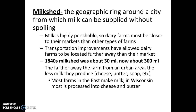Transportation improvements — refrigerated trucking and refrigerated train cars — have allowed dairy to move further from the market. Keep in mind, the further away you are from the market, the less likely you are to produce milk for sale; instead you'll produce cheese, butter, or soap. This applies well to Von Thunen's model, which suggests dairy needed to be really close to the city center. Most early US markets were on the East Coast, so East Coast dairy farms made milk, whereas Wisconsin specialized in converting milk into cheese or butter — things that don't perish.